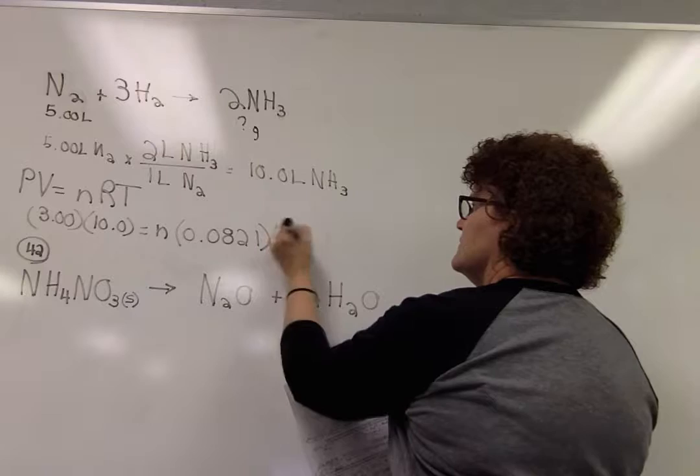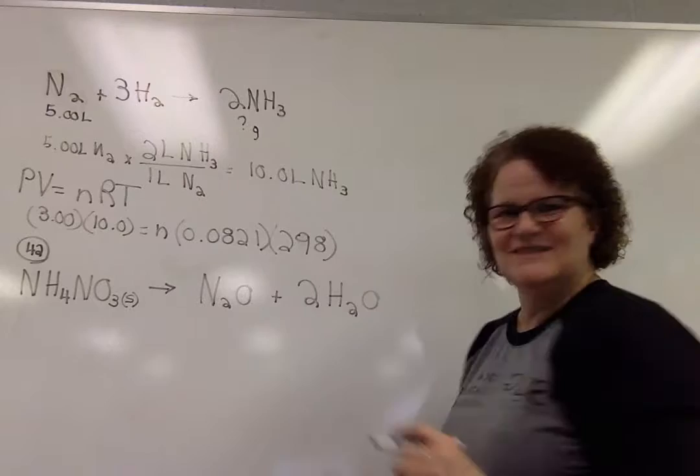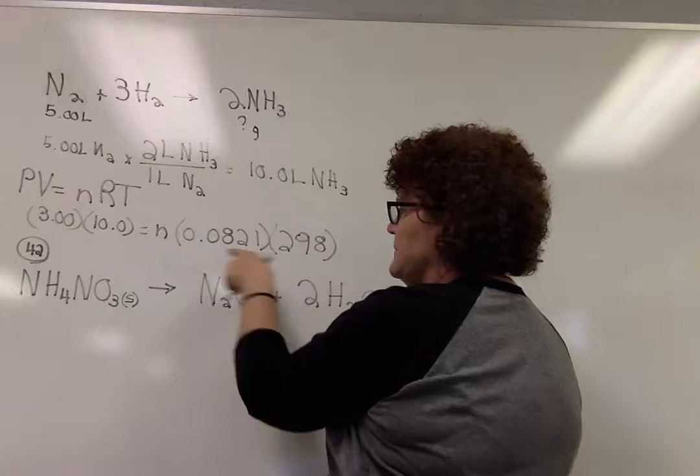All right? 298 Kelvin. All right, so now to solve for N, these numbers are connected to the unknown, so we're going to divide that by it.